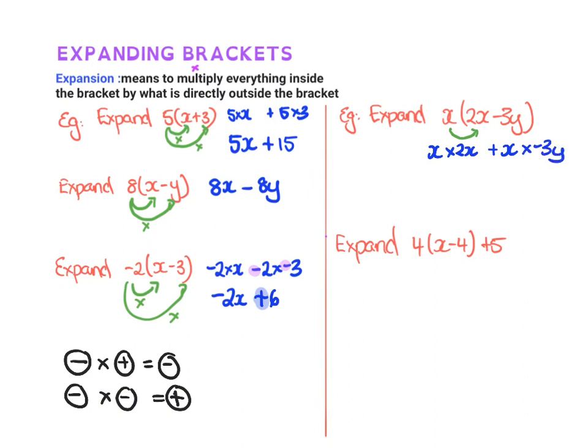So when you have x times x, that actually, we write that as x squared. Okay, so if you had x times x times x, that would be x cubed. All right, so here, when we have x times 2x, you just multiply the numbers. So we assume there's a 1 there. So 1 times 2 is 2. So we've got 2x squared because we've got the x by the x.